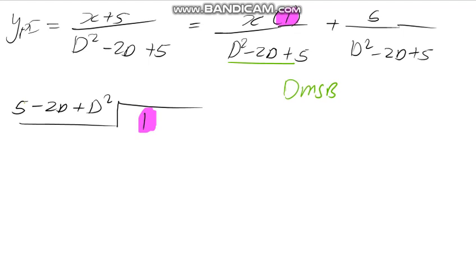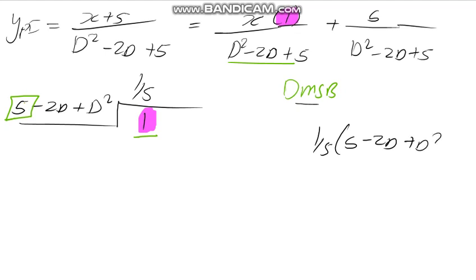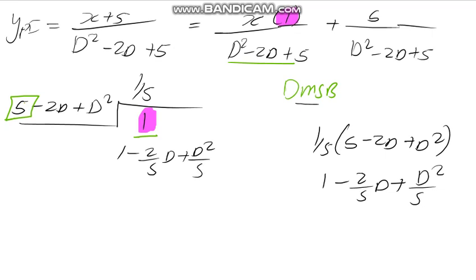Therefore we're going to do the DMSP method. You divide first: 1 divided by the first term which is 5, giving 1 over 5. Then you go to M — multiply — so you have 1 over 5 into everything: 5 minus 2D plus D squared, giving 1 minus 2/5 D plus D²/5. Then you go to subtraction — that's why I put the minus outside — that minus is for subtraction.